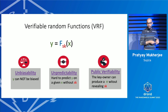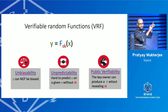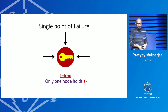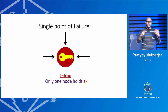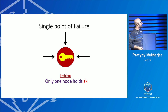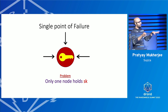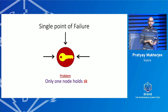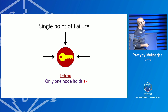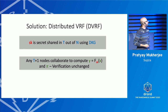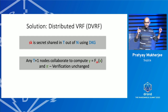Public verifiability requires generating a zero-knowledge proof that verifies an input-output pair X and Y. We go for a distributed solution — a distributed VRF service or threshold VRF — because of single point of failure: if only one node stores the secret key, it becomes a single point of failure. It's also not aligned with the ethos of blockchain technology, which is about decentralization. In distributed VRF, the secret key is secret-shared in a threshold fashion, T-out-of-N, using distributed key generation.